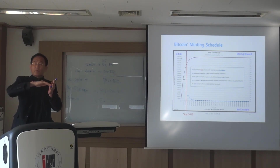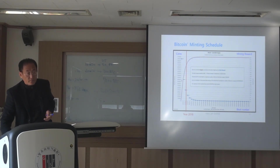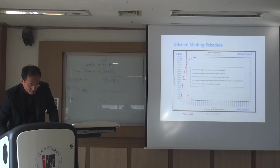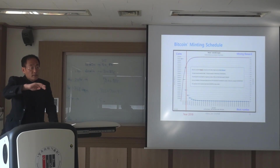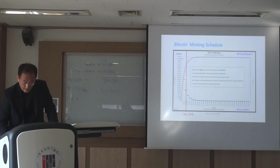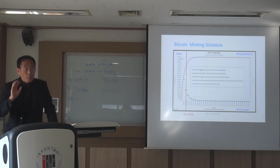So the number of Bitcoin issued per four years is going to be half of this number — 5 million. And then another four years pass, it is going to be half again. So this is 50, then 25, then half of 25 is 12.5 Bitcoin per block.